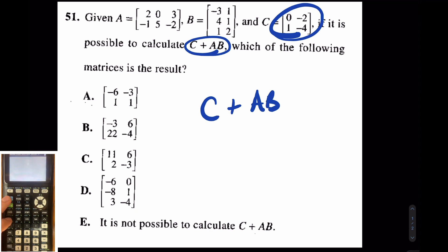I put in matrix B, and now I'm going to do second matrix and go over to edit. Go to matrix C, and I'm editing matrix C. This is a 2 by 2 question. This is 0, negative 2, 1, negative 4. I put in my matrices, and I'm pretty much done.